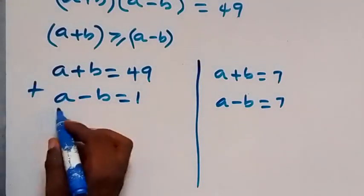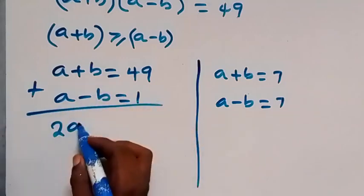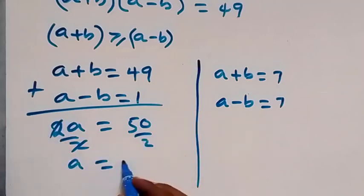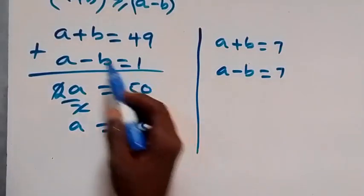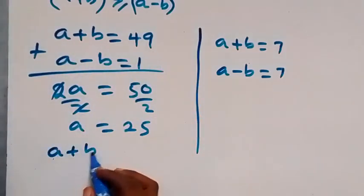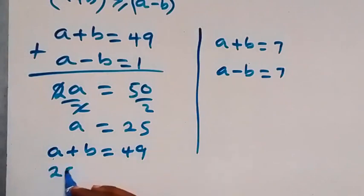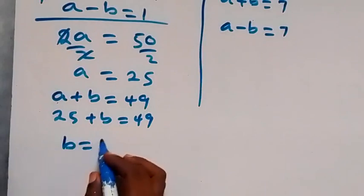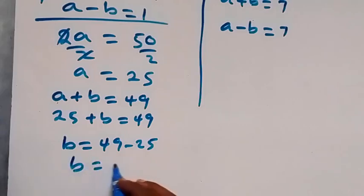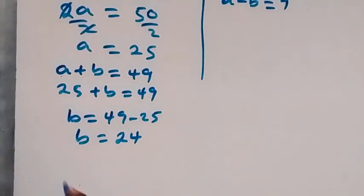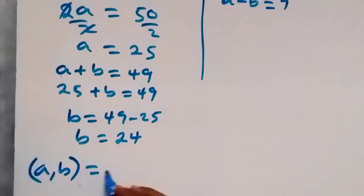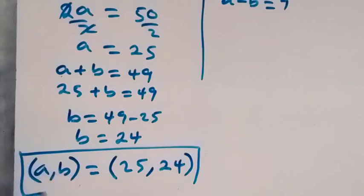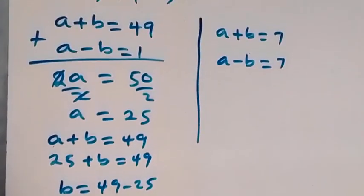For the first case, we solve by adding the two equations to eliminate b: a + a = 2a = 49 + 1 = 50, so dividing both sides by 2 gives a = 25. We then solve for b from the first equation: a + b = 49, so 25 + b = 49, giving b = 49 - 25 = 24. The first solution is (a, b) = (25, 24).